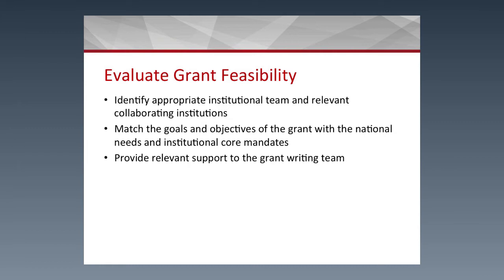Once feasibility is assessed, it's necessary to identify the team to write the grant. The team must ensure they are following donor agency rules and guidelines, and the institution should give them time to write — maybe a week or two. During that time they may identify collaborators within the country or internationally, and if those other institutions need to provide support letters, they will need to be contacted. The grant writing process is a very important component of the whole cycle.